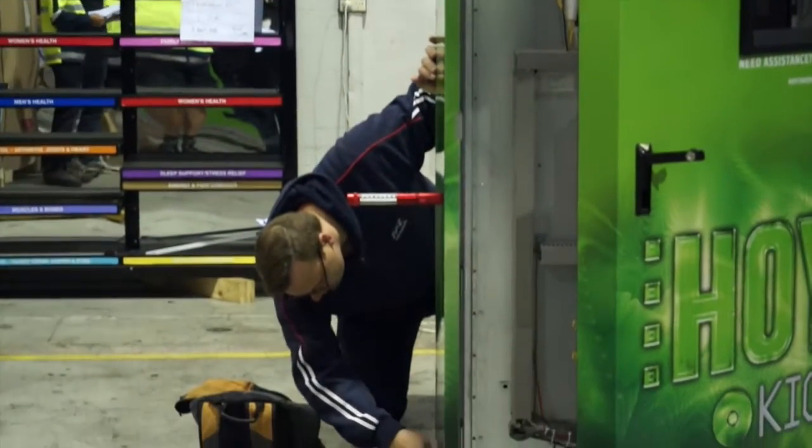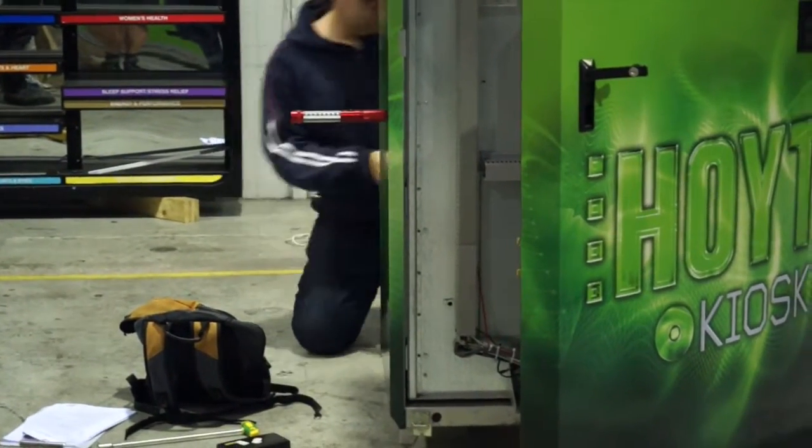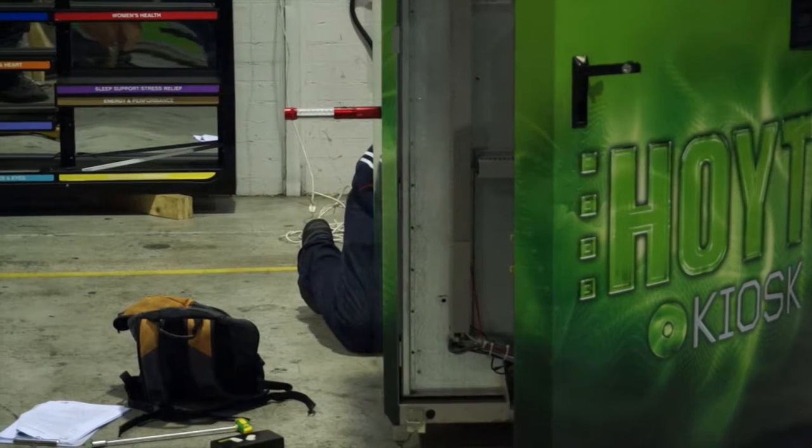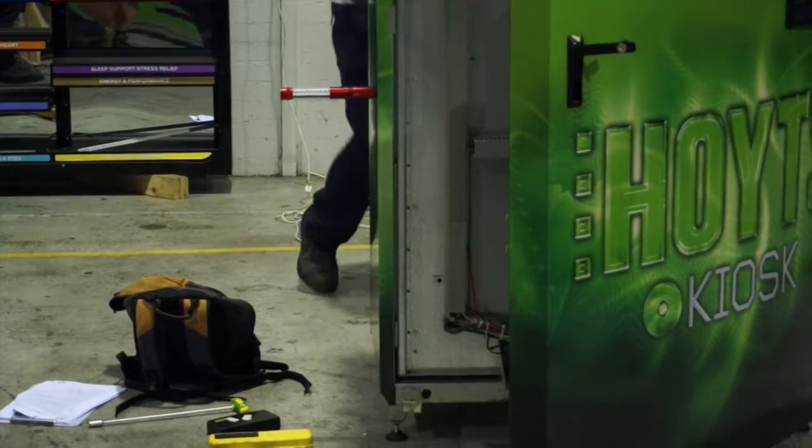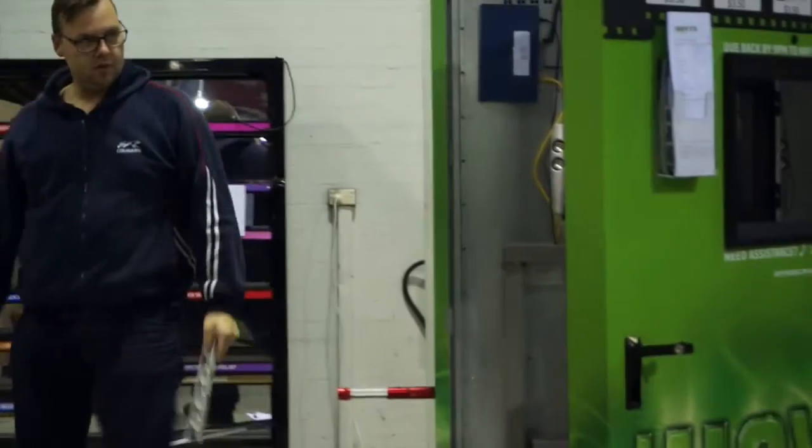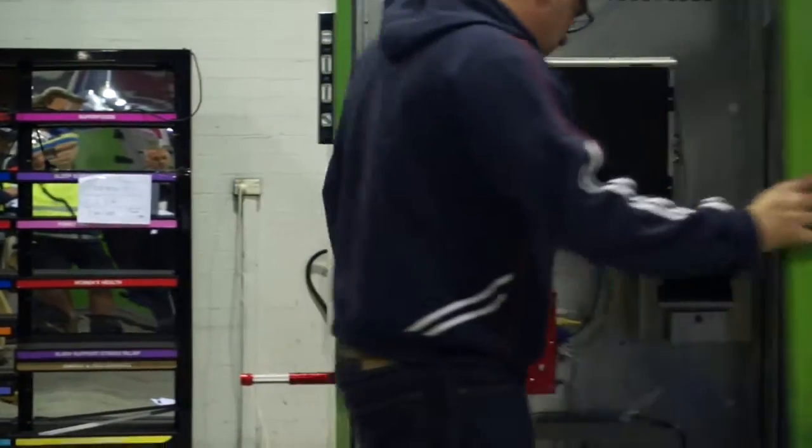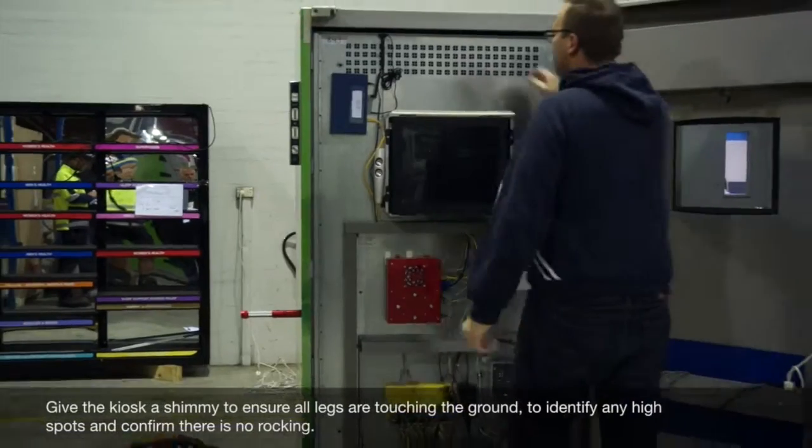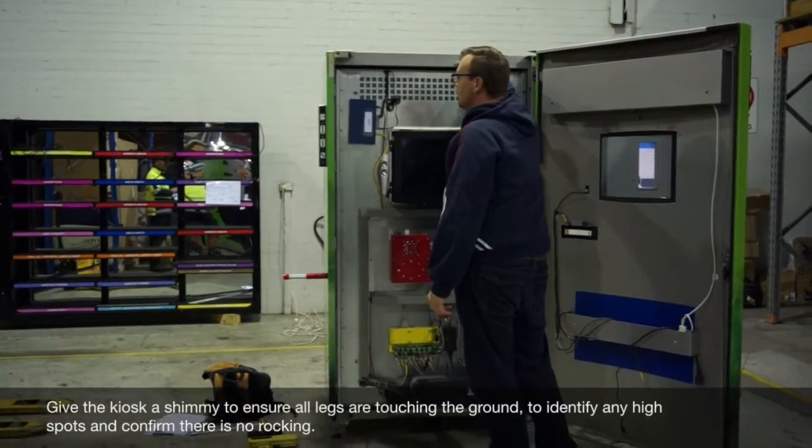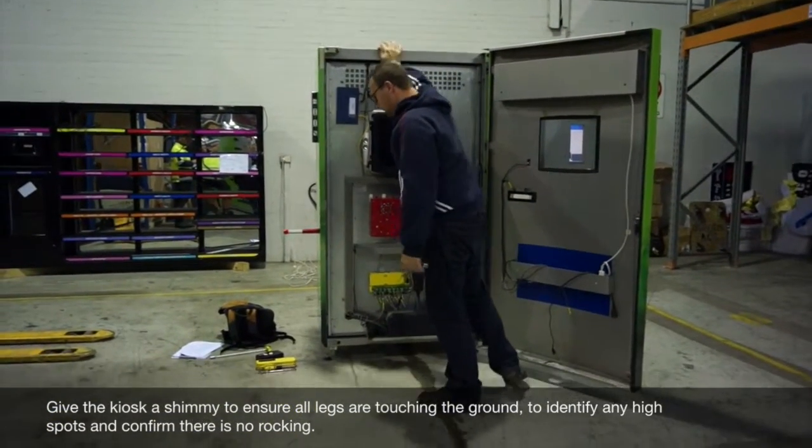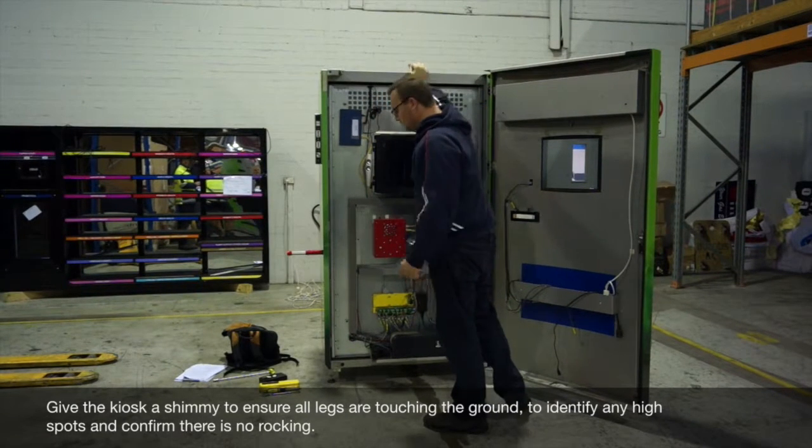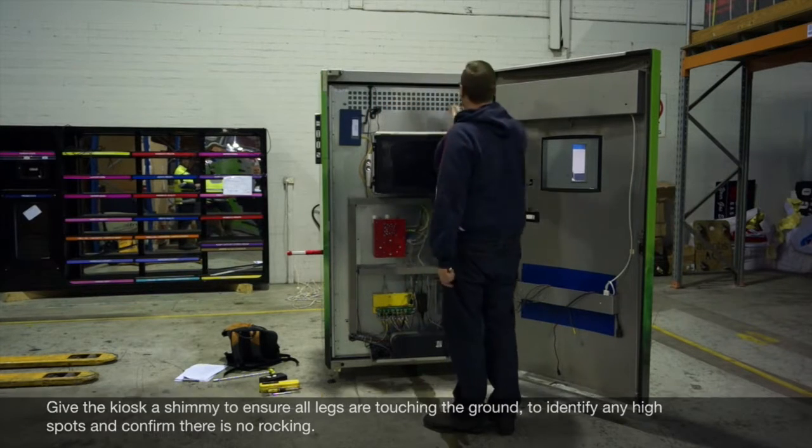So the gap is like 50mm on the door hatch, easy to pull out to get some access. I'm happy with that, give it a little shimmy. I usually do this because even though you do get a level, there might be a little bit of a high spot somewhere, so I usually just give it a nudge and you'll sort of feel if there's a little bit of a rock, but that's pretty good.